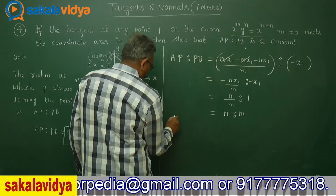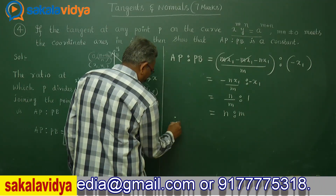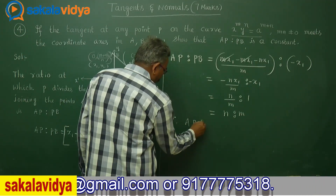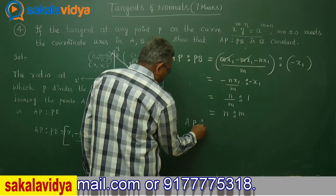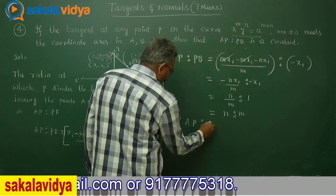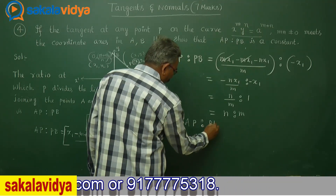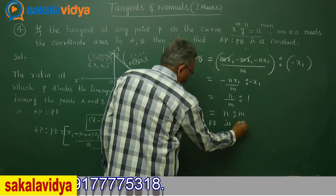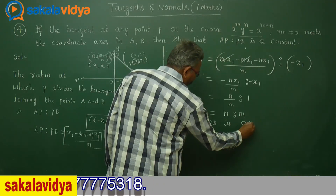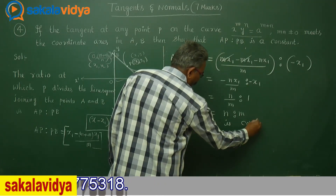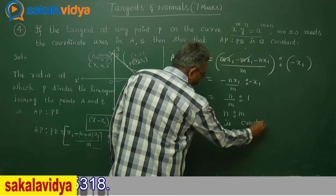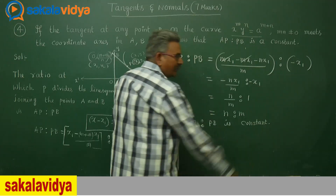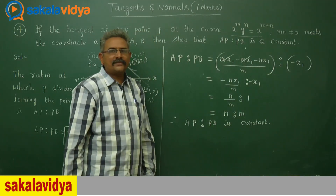Therefore, AP:PB = n:m is a constant (independent of x and y). Hence proved.